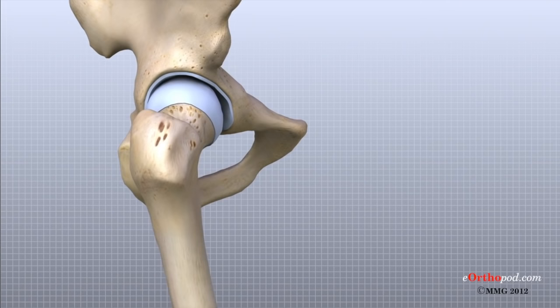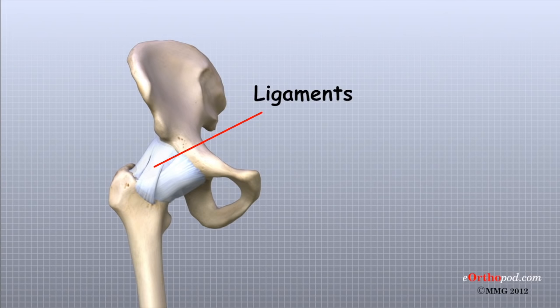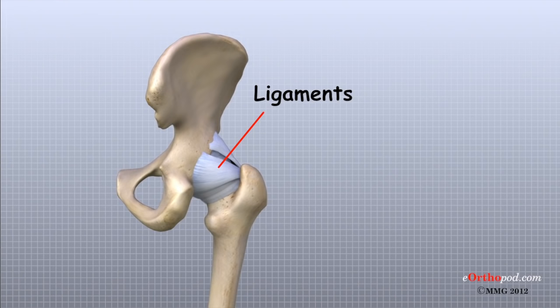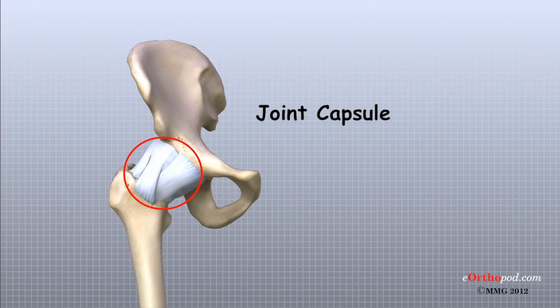Ligaments are soft tissue structures that connect bones to bones. Surrounding the hip joint, the joint capsule is formed by a group of strong ligaments that connect the top of the femur to the acetabulum. A joint capsule is a watertight sac that surrounds a joint. These ligaments of the joint capsule are the main source of stability for the hip. They help hold the femoral head in place in the acetabulum or socket.